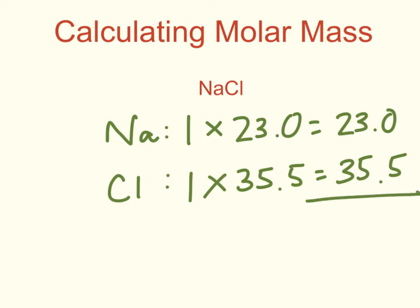To finish my problem, I need to add those two numbers together. So 23 plus 35.5 gives me 58.5 grams. And that is the molar mass for sodium chloride.